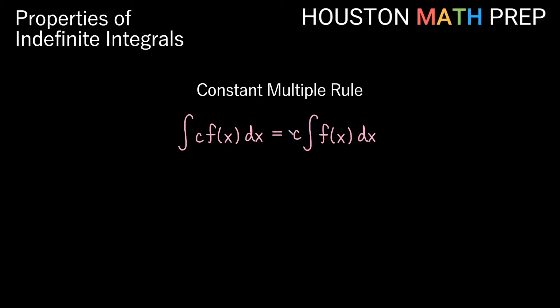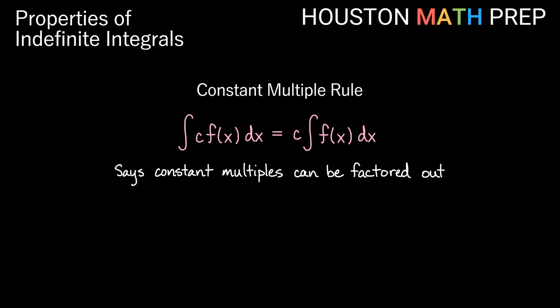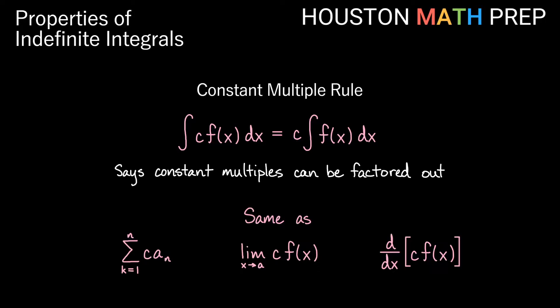Another property for indefinite integrals is the constant multiple rule. This property says that we can factor out constant multiples outside of the antiderivative, calculate the antiderivative without the constant multiple attached, and then multiply it back in at the end. This is similar to the constant multiple property for sums, limits, and derivatives, and it also applies to indefinite integrals.